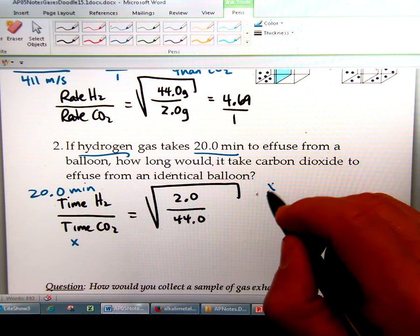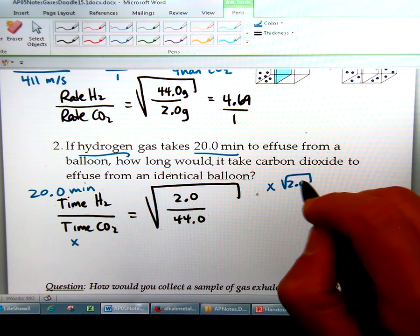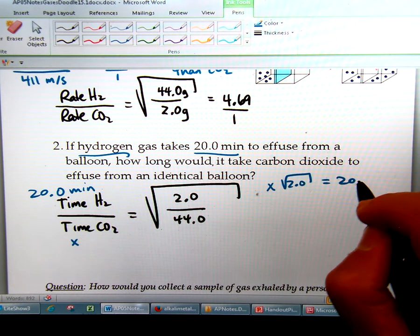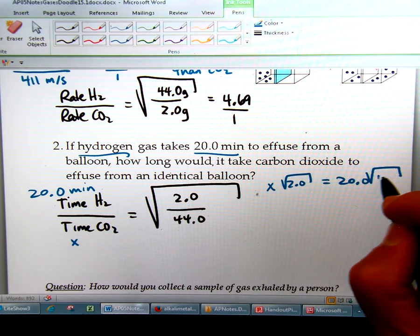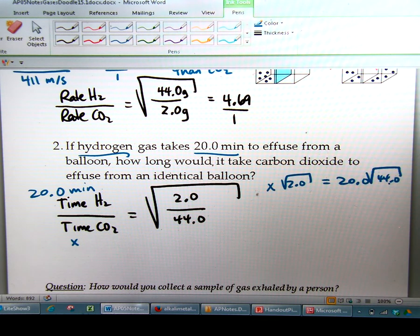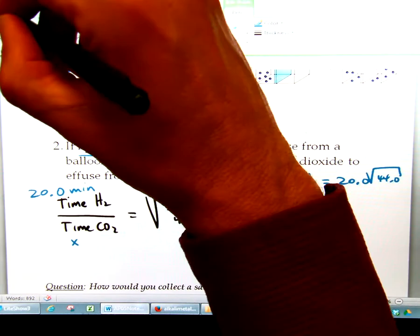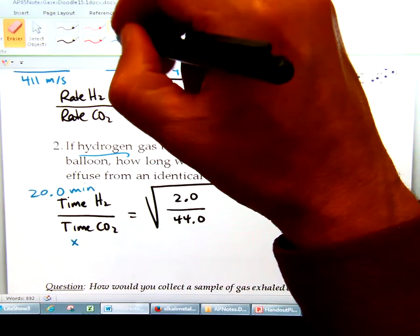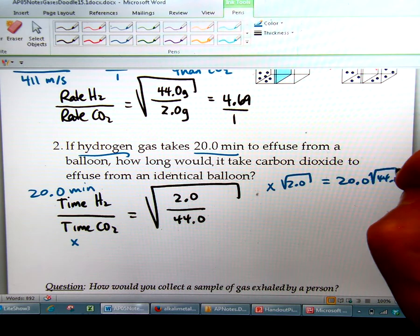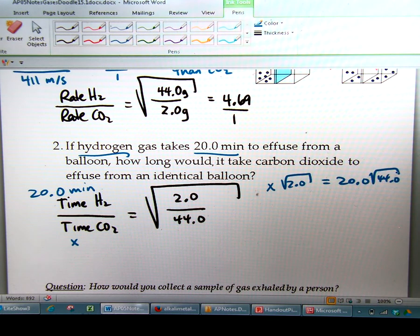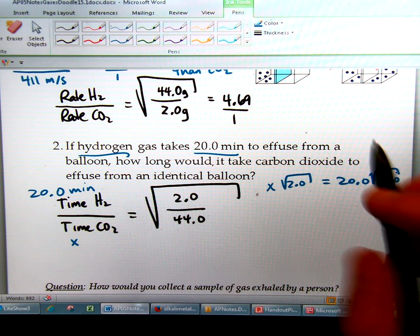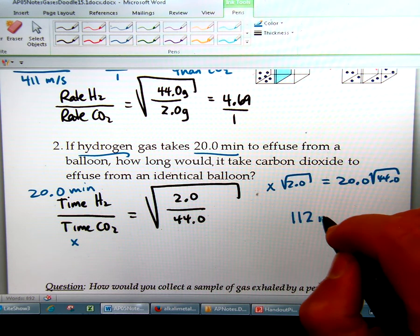So now you're just going to have to do the math for this. I'll write it out for you. x times the square root of 2 equals 20 times the square root of 44. So you just do the math for that. And you're going to take 20 times the square root of 44 divided by the square root of 2, and you're going to get 112 minutes.